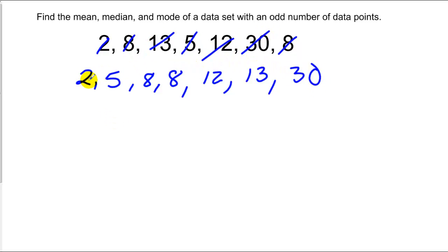Now if I want to just take and find the average or the mean, basically I add these numbers up and divide by the total number of numbers. In this case, I have 7 numbers. It's 2 plus 5 plus 8 plus 8 plus 12 plus 13 and 30, divide that by 7. In this case, we get about 11.14.